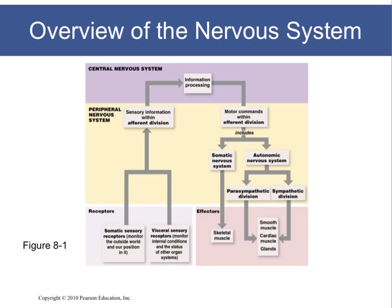The nervous system is often divided into two general categories: the central nervous system and the peripheral nervous system. The central nervous system, or the CNS, consists of the brain and the spinal cord, and thus is responsible for information processing.